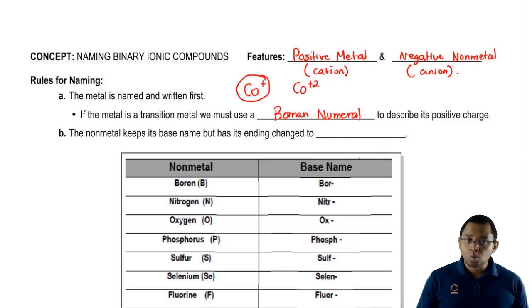So cobalt plus one would be cobalt one. We put it in brackets to one and cobalt plus two would be cobalt two.